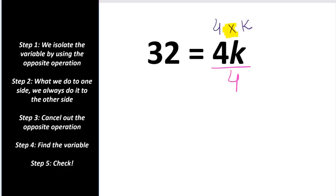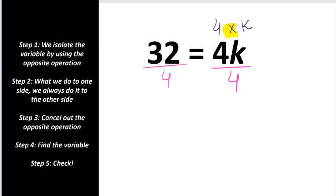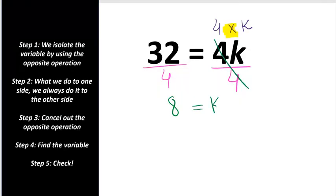What we do to one side, we must do to the other side to keep it balanced. So let's divide 32 by 4. Now 32 divided by 4 is 8. k times 4 and k divided by 4 just cancel each other out, so we are going to cross it off, and we are left with k.